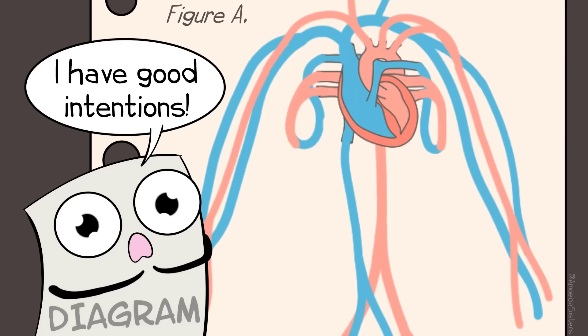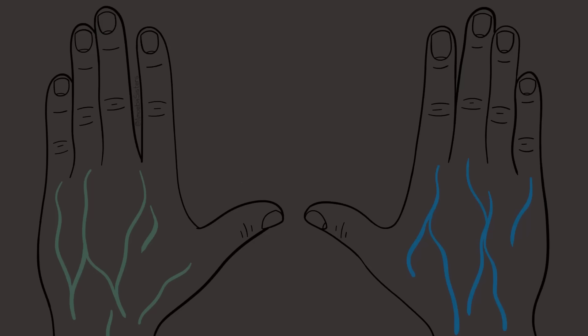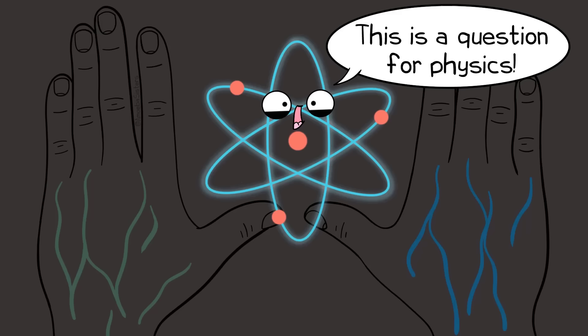It doesn't mean the blood, or the veins, or the arteries are actually that color. Veins that you see under your skin may look blue or green, but that involves the way they appear under the skin, and the reason for this would make a great physics topic, but I digress.